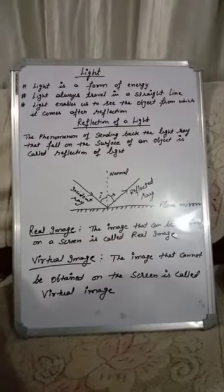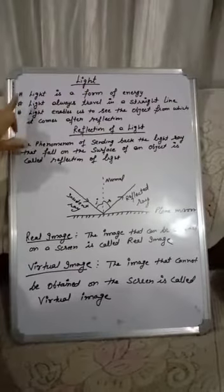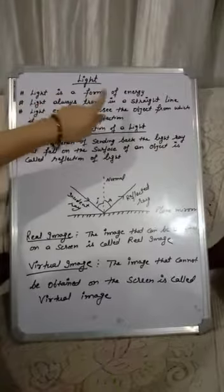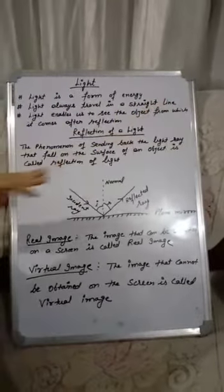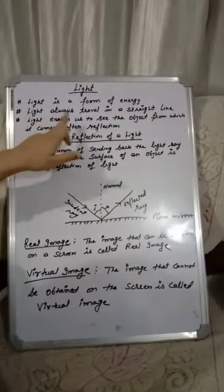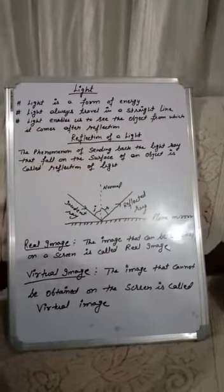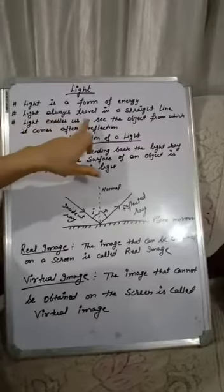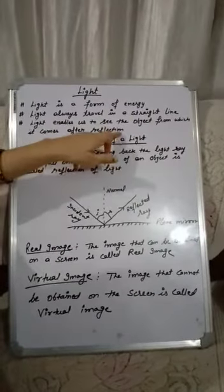Good morning students. Today we discuss a new chapter: light. Light is a form of energy. Light always travels in a straight line. Light enables us to see the objects from which it comes after reflection — meaning we cannot see anything without light.